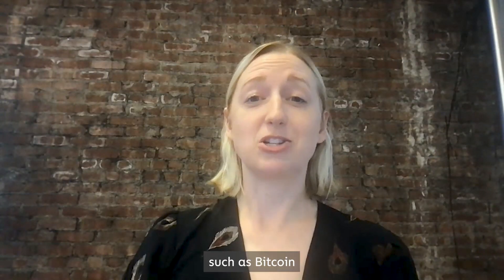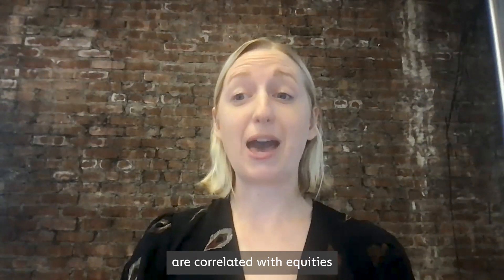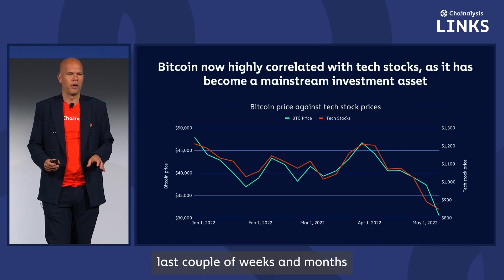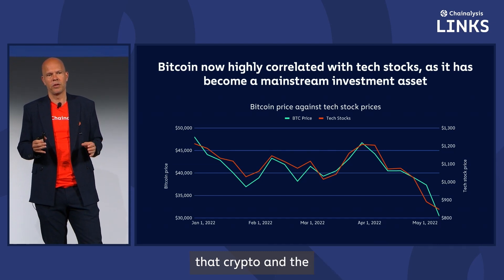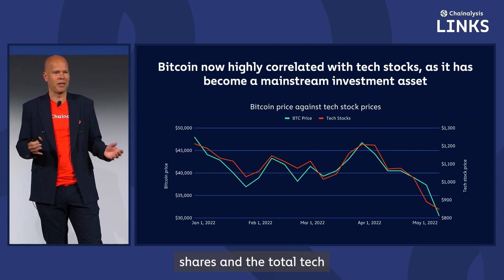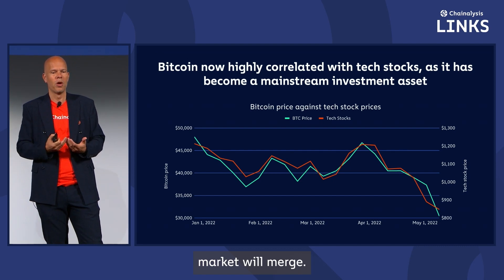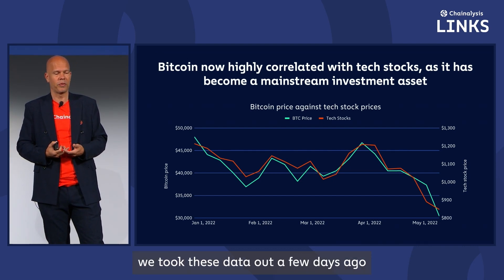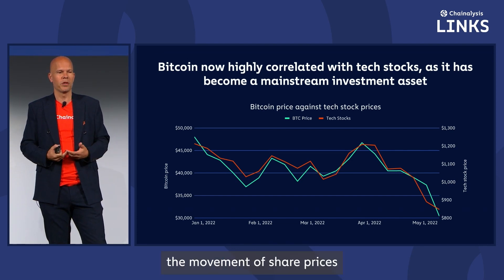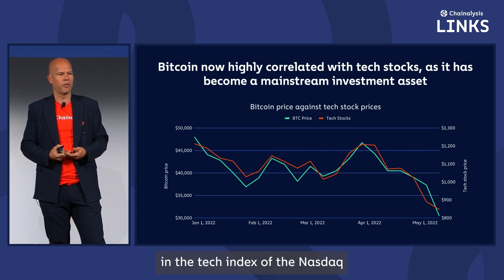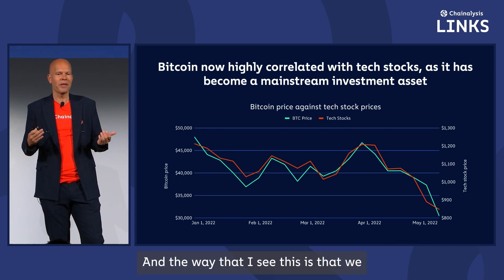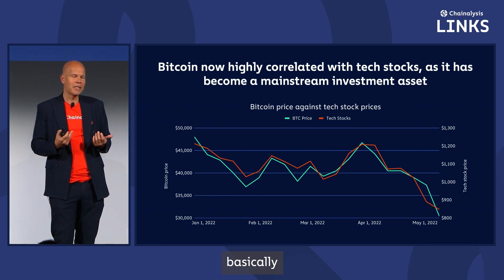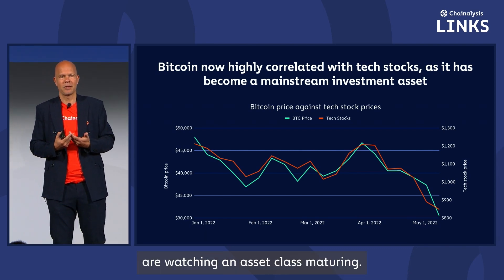Increasingly, the price of crypto assets such as Bitcoin are correlated with equities such as tech stocks and the S&P. I've been saying over many years that crypto and the normal tech shares and the normal tech market will merge. We took this data out a few days ago to show the movement of share prices in the tech index of NASDAQ and compared that to the price of Bitcoin, and there's clearly a correlation here.